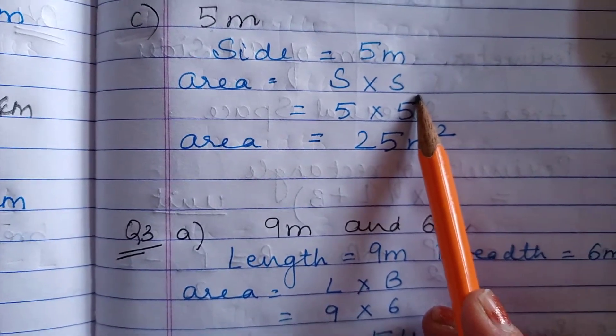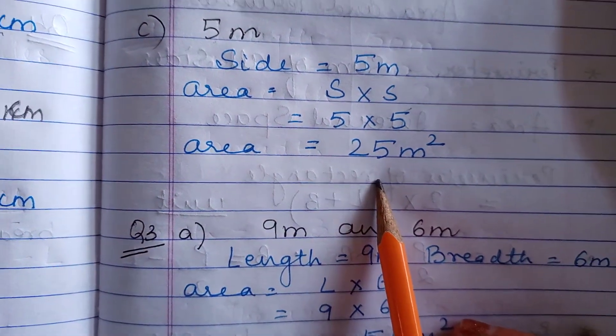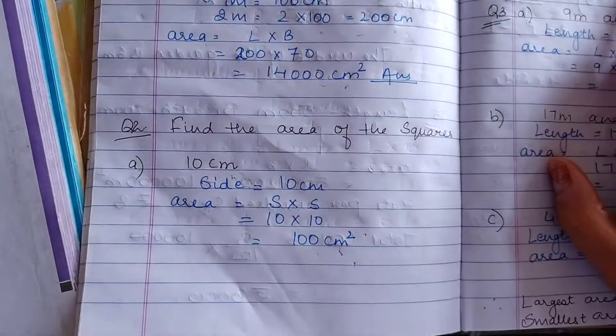Find the area. Side multiplied by side. The answer is 25 meter square. So this was your question number 2.